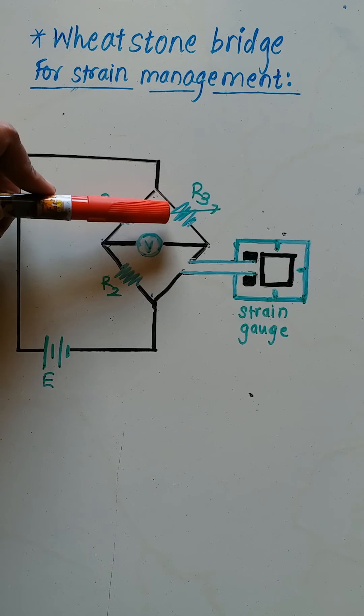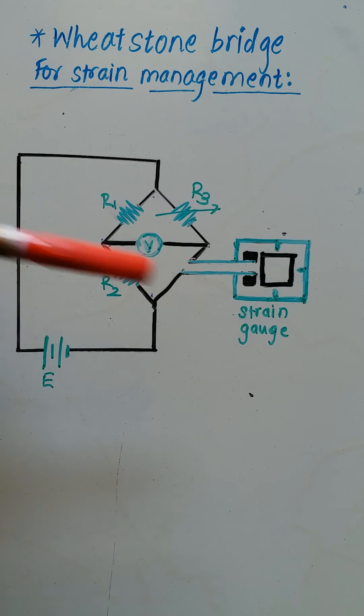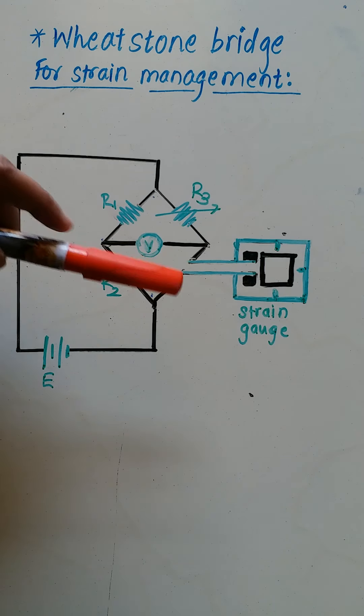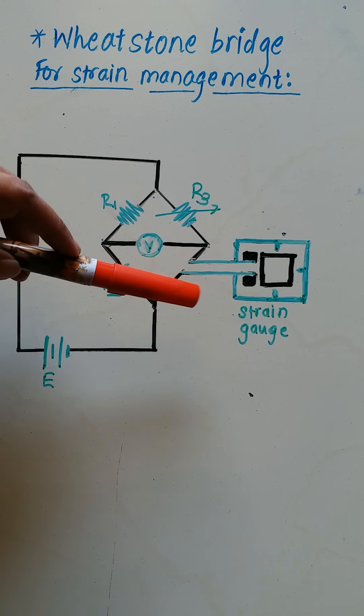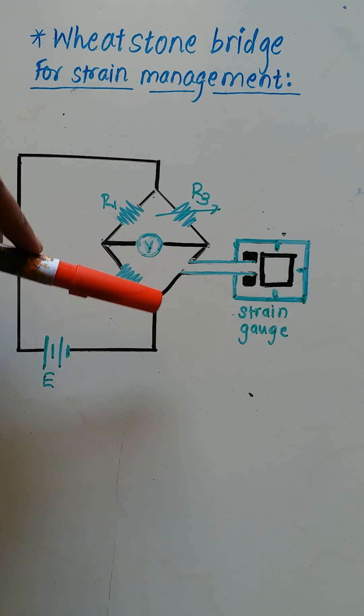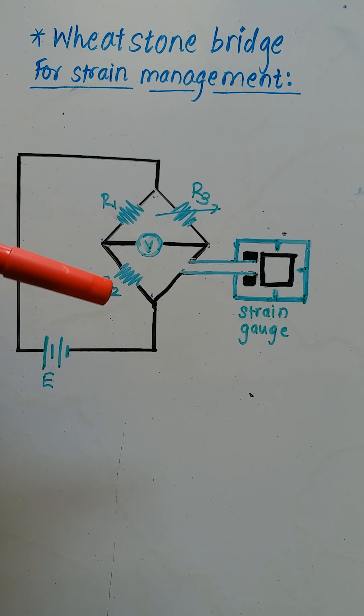And third resistance R3 is variable resistance. In place of unknown resistance R4, strain gauge is connected. Here, the electrical resistance of strain gauge is proportional to the strain in that device. The range of strain gauge resistance is from 30 Ohm to 3000 Ohm.